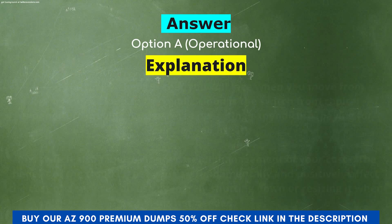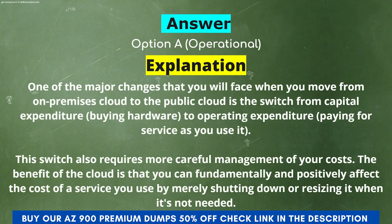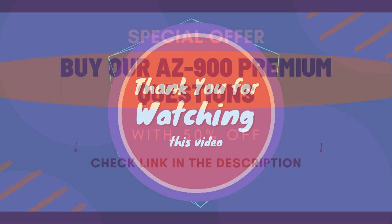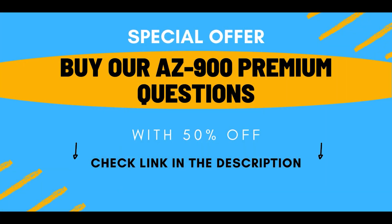Explanation: One of the major changes when you move from on-premises to the public cloud is the switch from capital expenditure — buying hardware — to operating expenditure — paying for service as you use it. This switch also requires more careful management of your costs. The benefit of the cloud is that you can fundamentally and positively affect the cost of a service by merely shutting down or resizing it when it's not needed. Thank you for watching this video. Buy our AZ-900 premium questions with 50% off — check the link in the description.